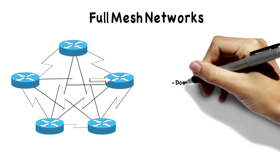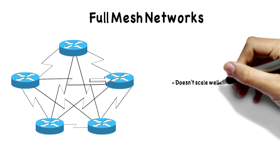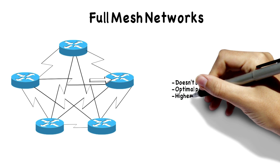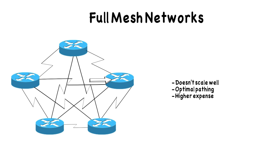But this does not scale very well. If I want to have 10 sites, it's 10 times 10 minus one — 10 times nine is 90 divided by two — suddenly we're at 45 interconnections to fully mesh 10 sites. On the positive side, we do get optimal pathing going directly from source to destination, but because of the extra links there's a higher expense compared to a hub and spoke topology. Also, we don't have to have a full mesh — we could have a partial mesh topology where we selectively remove certain links, and sites can still communicate by relaying traffic through another site.